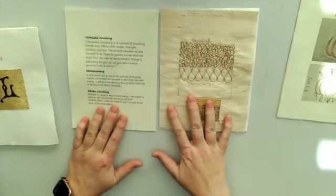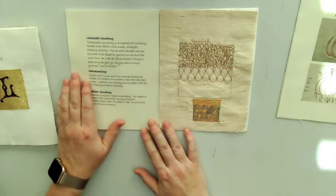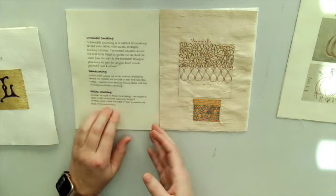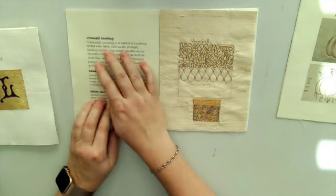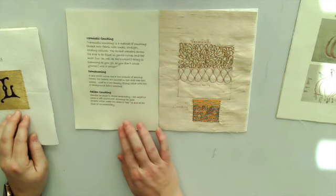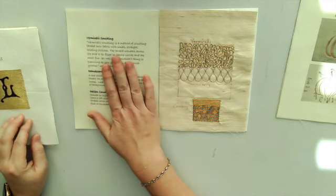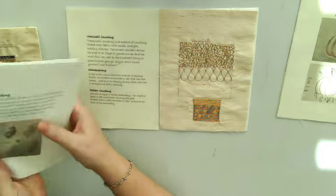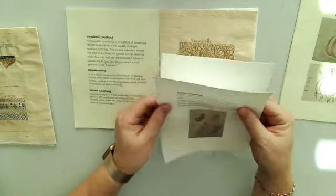Here's my next layout which is the vermicelli damascening and Italian coaching and my samples and if you notice the difference here, this fabric is calico that I got from Tanya Berlin and this fabric here is my sugar sack.